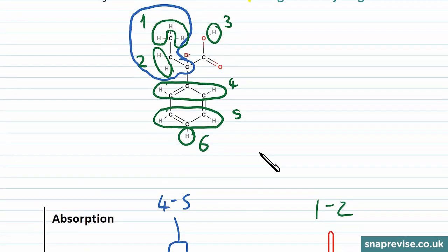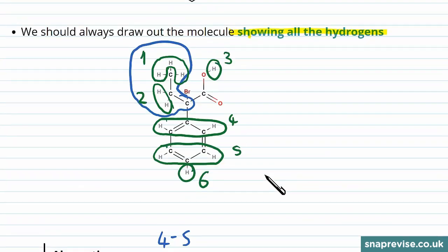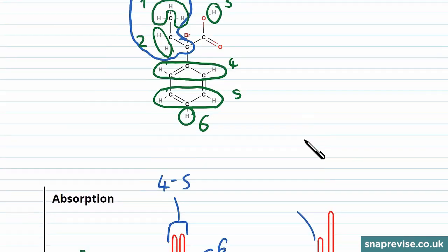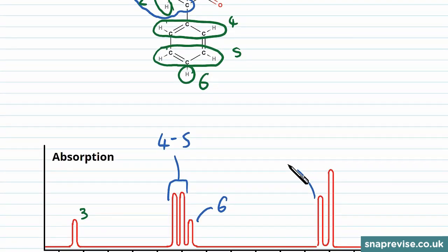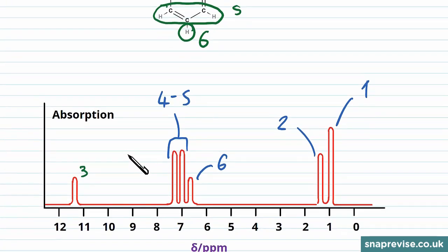The same can be said of environments one and two, where the shorter peak has two thirds of the area of the taller one, because there are only two hydrogens in environment number two, whereas there are three hydrogens in environment number one. So we know the shorter peak is environment number two, and the taller peak is environment number one. So you can see that we've now much more precisely allocated which peak corresponds to which environment.